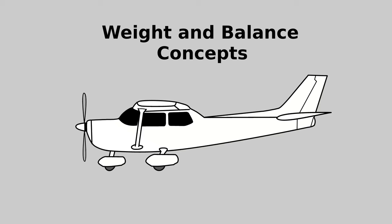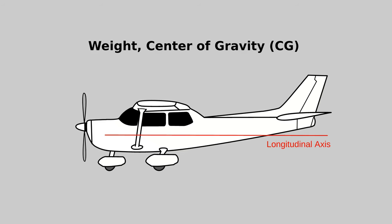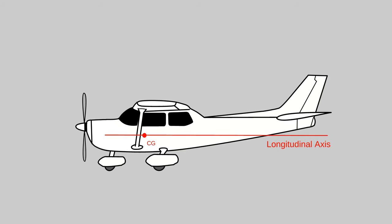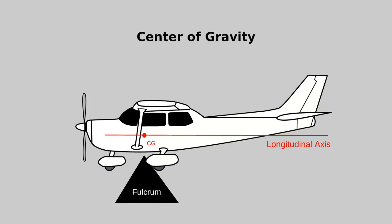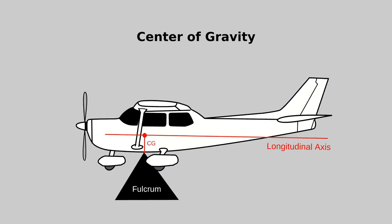When we talk about the weight and balance of an aircraft, we're referring to two things: the aircraft's total weight and the location of the center of gravity on its longitudinal axis. The center of gravity, also called the CG, is the point at which the aircraft would not tip over if balanced on top of a fulcrum.